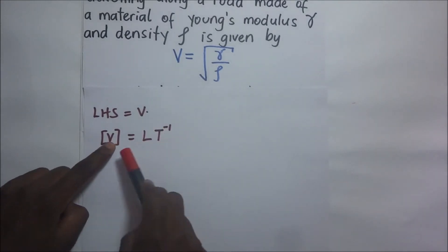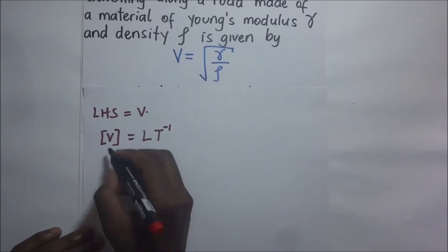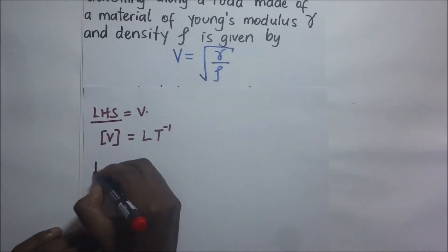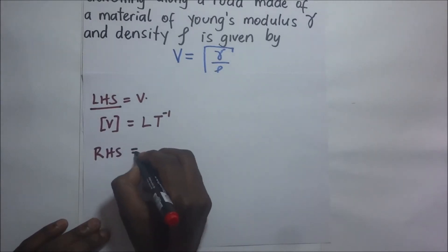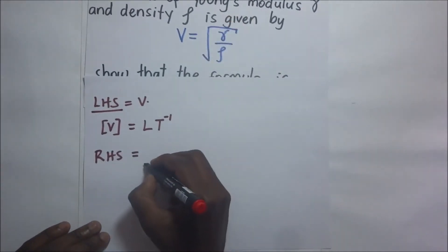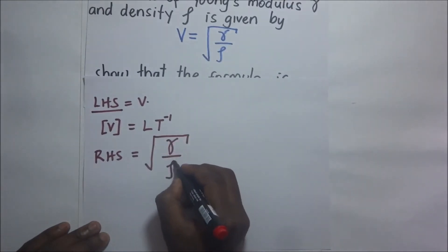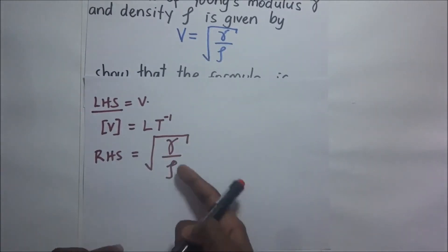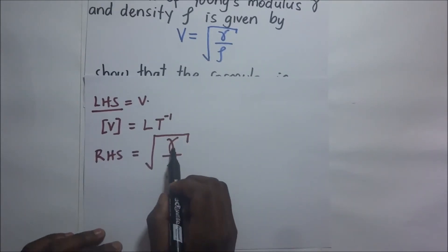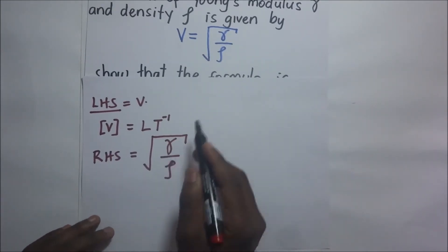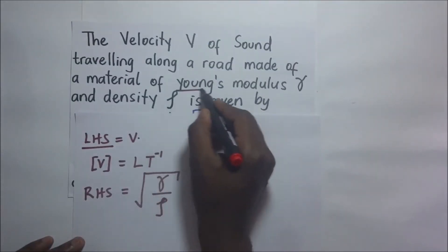So that's how we get the dimensions of velocity. This is our left hand side, so let's go ahead and look at the right hand side. On the right hand side we have Alpha over row under a square root. We need to find the dimensions of Alpha. Now Alpha, according to our question, happens to be Young's modulus.